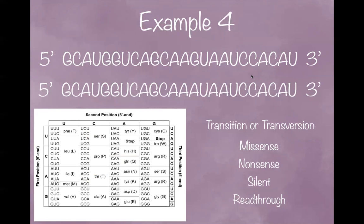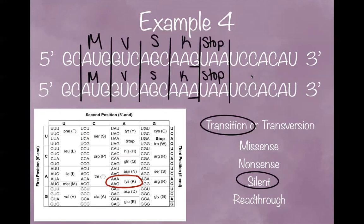Now pause the video and work through our last problem. Since this was a purine to purine base change, we can see that it's a transition mutation. Even though its coding is different, the amino acid doesn't change, so this is a silent point mutation. Hopefully you got that right.